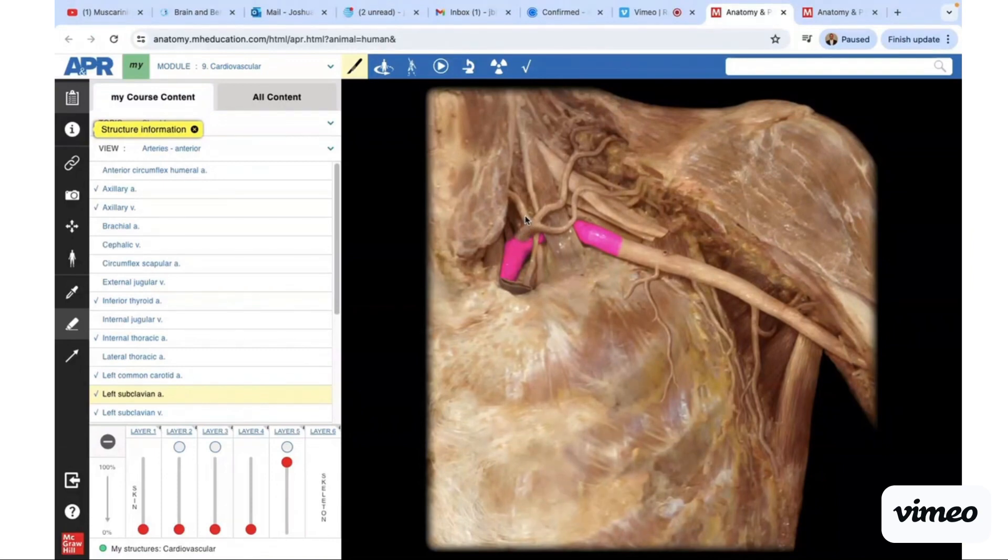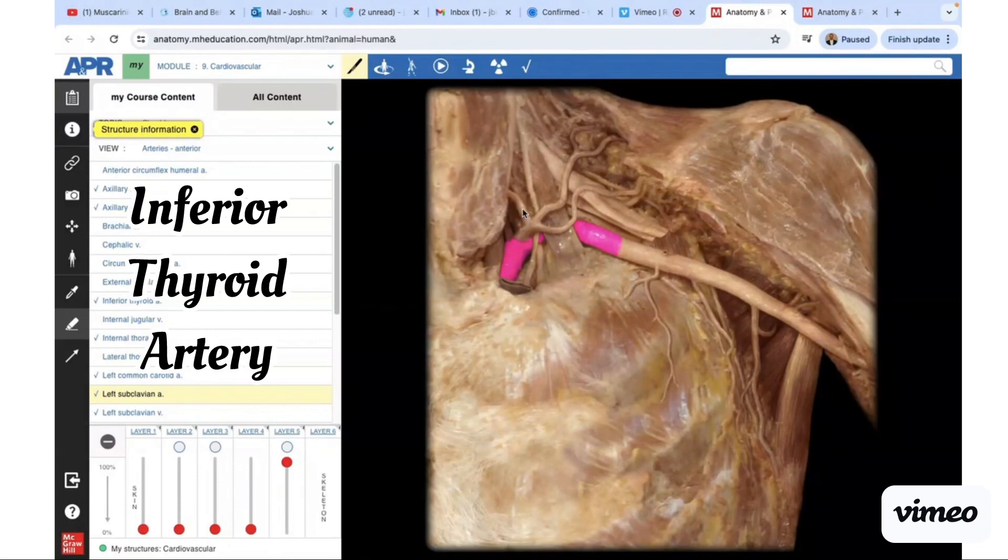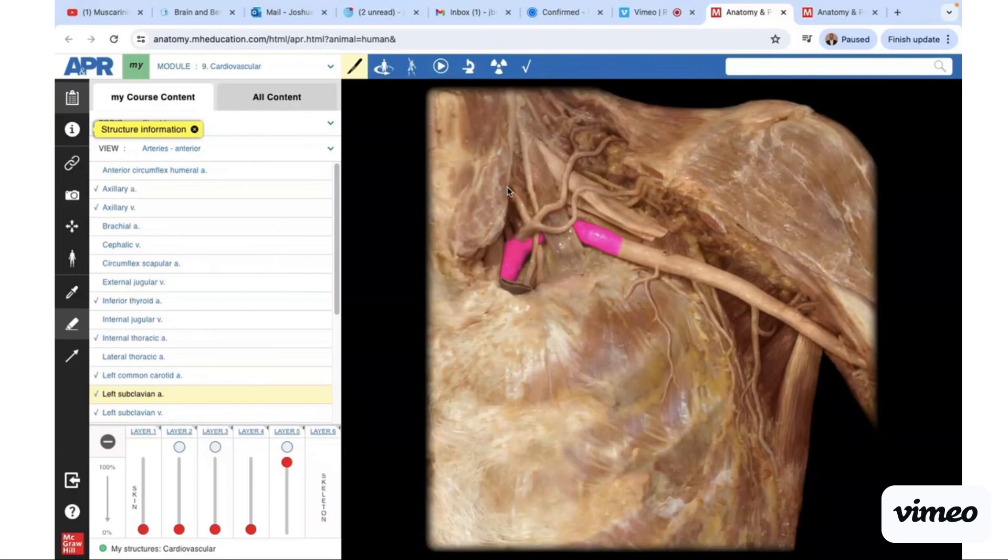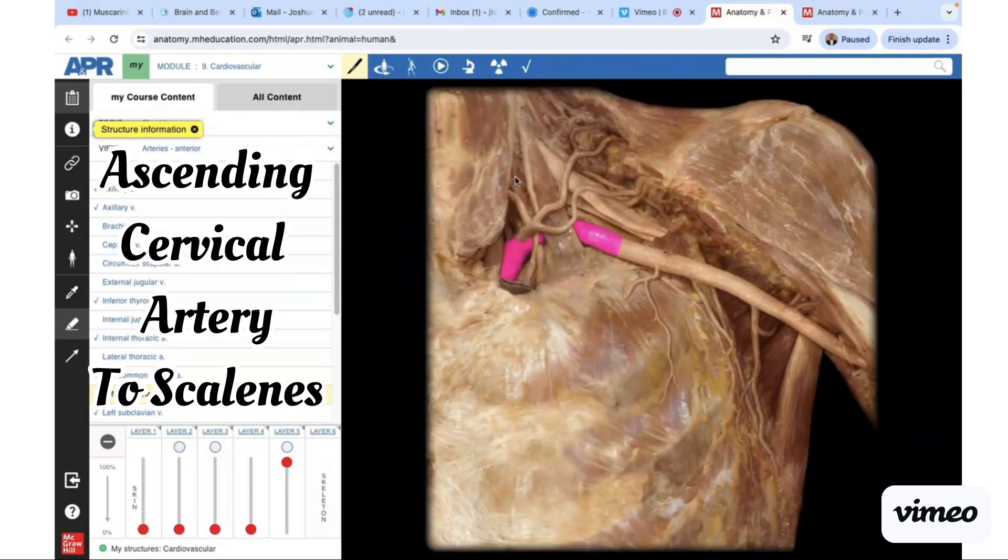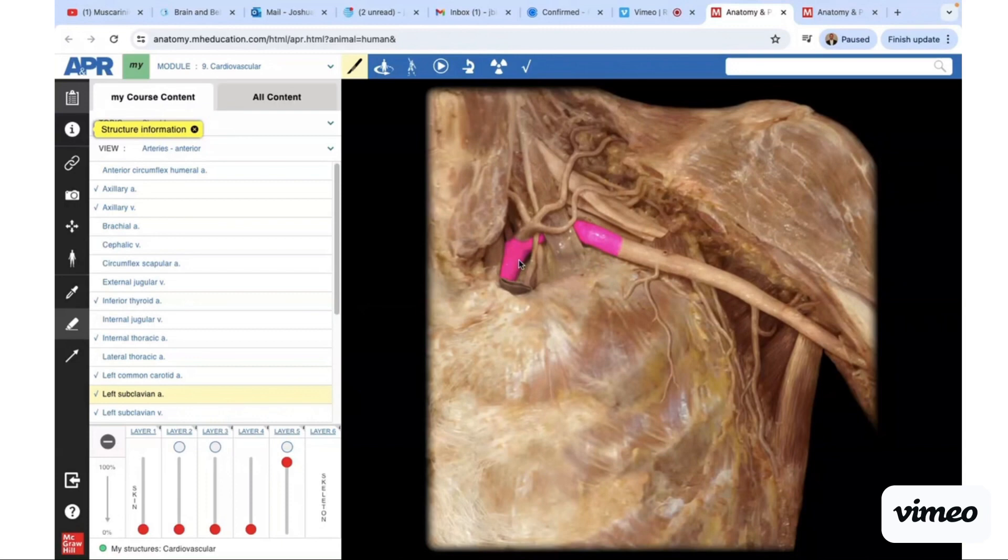Here's the thorocervical trunk coming off the left subclavian artery. It branches into the inferior thyroid artery, which will provide some blood supply to the thyroid. Then that one branches into an ascending cervical artery that will provide blood supply to the scalene muscles.